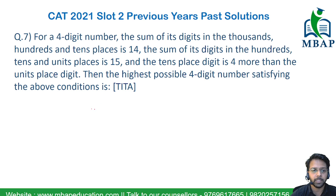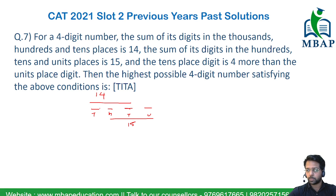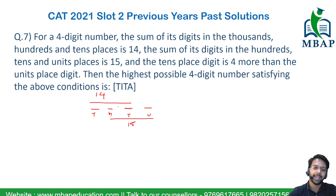It is basically a four-digit number in total. The sum of the thousands, hundreds, and tens digits has been given as 14. On the other hand, the hundreds, tens, and units digit total has also been given as 15. If you read these first two points, you will understand that the hundreds and tens digits are common in both expressions.